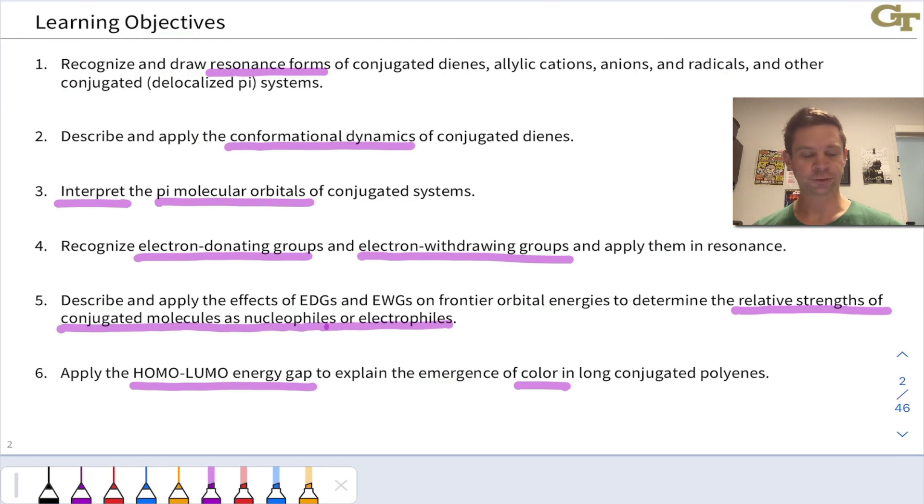allyl systems. We'll take a deep dive into allylic intermediates, cations, anions, and radicals, and other kinds of conjugated systems, for example, those incorporating heteroatoms.